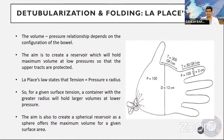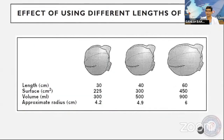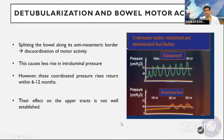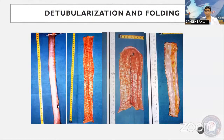Technical considerations: ileum and colon are most commonly used today as detubularized segments. Ileum offers the greatest compliance; ileal mucosa atrophies over time, giving decreased mucus production and decreased absorption of urinary electrolytes. Laplace's law — tension equals pressure times radius — is fundamental: for a given surface tension, a container with greater radius holds larger volumes at lower pressure. The aim is to create a spherical reservoir offering maximum volume for a given surface area. Detubularization splits the bowel along its anti-mesenteric border, disrupting coordinated motor activity and reducing intraluminal pressure rises.